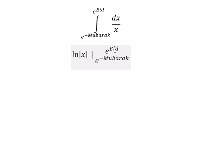So we put this one in x and this one in x, minus ln of e to the power of negative Mubarak.